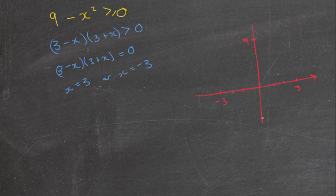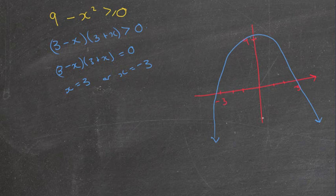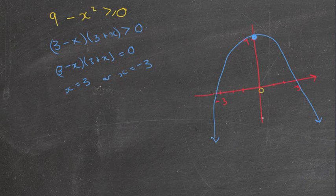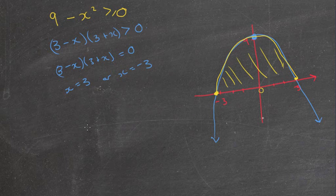Because there's no 'plus something x' term, the turning point lies right on that coordinate (0, 9). We're looking for values where the function is greater than zero, which is where the graph sits above the x-axis. Looking at the graph, that region is between the two x-intercepts, so the solution is -3 ≤ x ≤ 3.